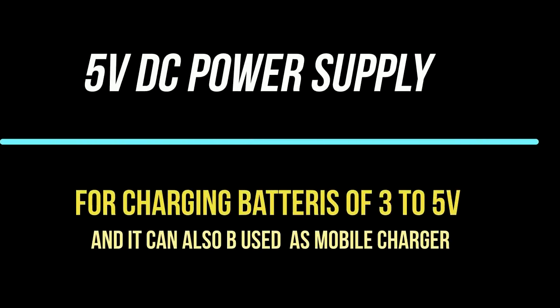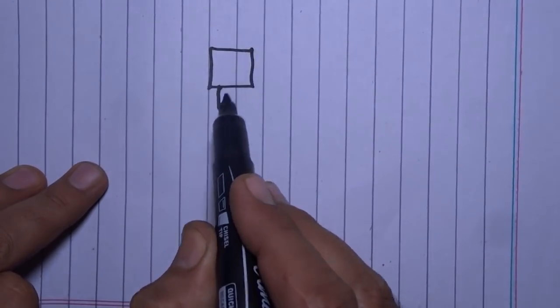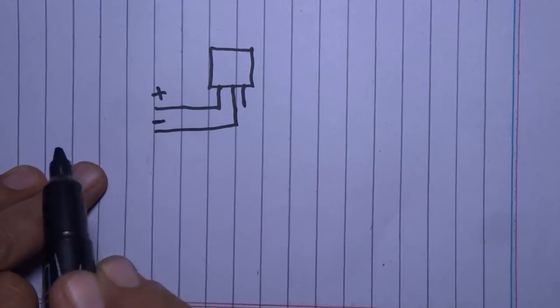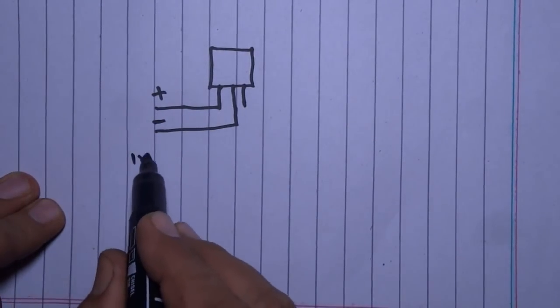Hi friends, in this video I will show you how you can make a 5 volt DC power supply from 5 to 24 volts. Look at the diagram. I am using 7805 transistor. It is positive, it is negative. Input will be 5 to 24 volt and output will be 5 volt always.